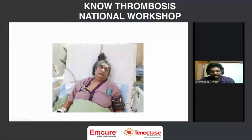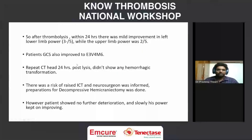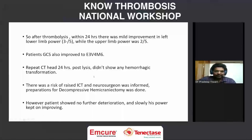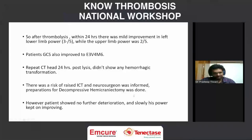Intubation was advised but not done. Post-thrombolysis at 24 hours, amazingly she showed significant improvement. Lower limb power improved to around 3-/5, upper limb improved to 2/5, and GCS improved significantly to E3, V4, M6. The 24-hour post-lysis CT did not show any hemorrhagic transformation. There was a risk of raised ICP, so the surgeon was informed and preparation was made for decompressive hemicraniectomy, but this was not required. There was no further deterioration.